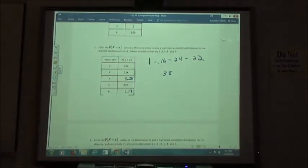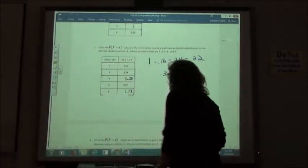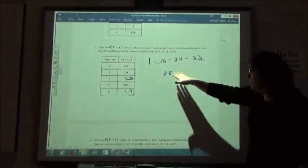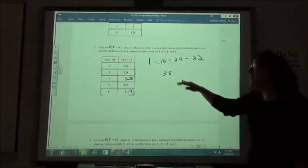The 0.21 plus the 0.17 add up to 0.38. If you added all five of them, they should add up to one. So it doesn't matter which pair you use as long as they add up to what we have left here.